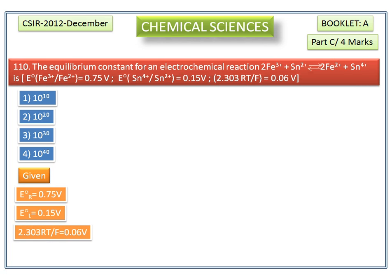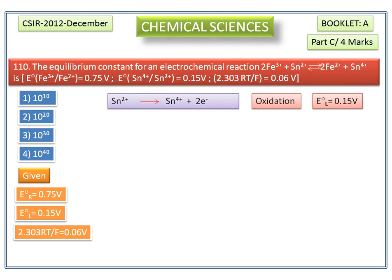According to these values, Sn²⁺ is oxidized into Sn⁴⁺ plus 2 electrons. Its E°L is equal to 0.15 volt or E° anode is equal to 0.15 volt. Ferric ion is reduced into ferrous ion.